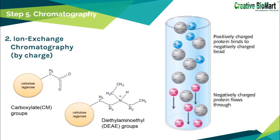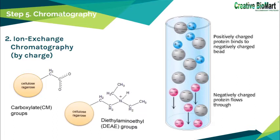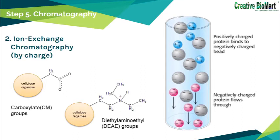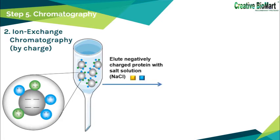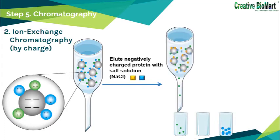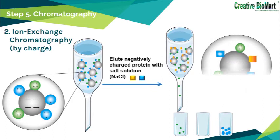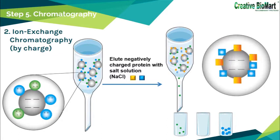In ion exchange chromatography, proteins may have net positive or negative charge at different pH ranges. A positively charged protein binds to a column of beads containing carboxylate groups, whereas a negatively charged protein binds to beads containing diethylaminoethyl groups. Positively charged proteins can be eluted by increasing the concentration of sodium chloride or another salt in the eluting buffer, because sodium ions compete with positively charged groups on the protein for binding. Proteins with less net positive charge are released first, then higher charge density proteins.